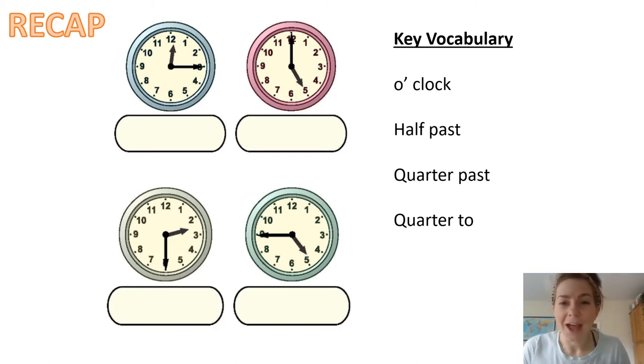Okay, so we should have matched them up, so let's go through the answers. Let's start with o'clock. So o'clock matches to our pink clock and maybe you can tell me what the time is as well. It is, well done, five o'clock. So the hour hand is pointing to five and the minute hand is pointing to 12, which shows it is o'clock.